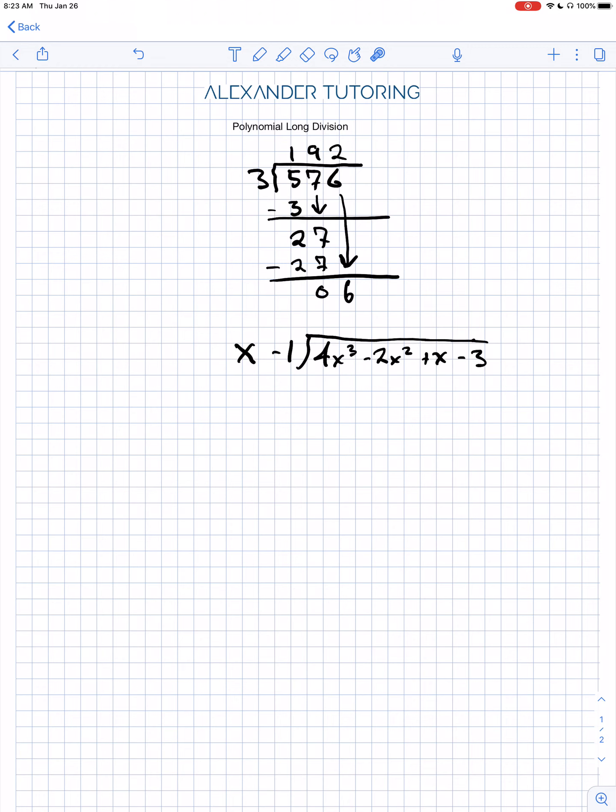Another way of saying that is what is 4x cubed divided by x? I'll just write that off to the side so you can see. Well, that's actually not that bad, right? Because the x's just cancel. You get 4x squared.